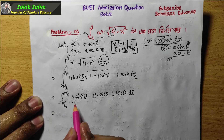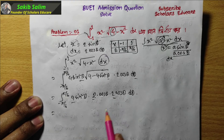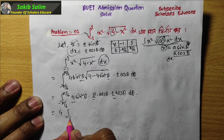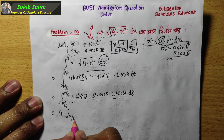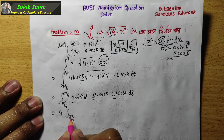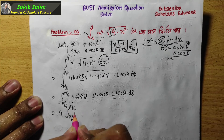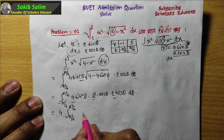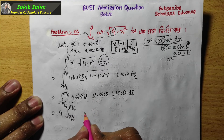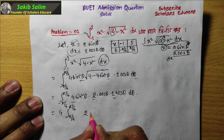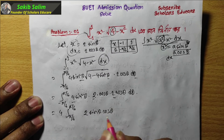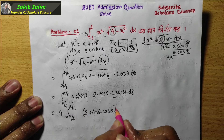Writing out the constants, 2 times 2 times 2 times 2 gives us 16. Then we write sin squared theta times cos squared theta. Using the identity, 2 sin theta cos theta squared, we can simplify the expression.